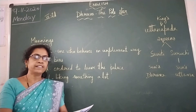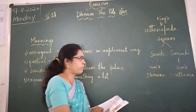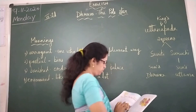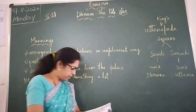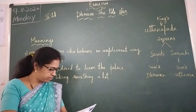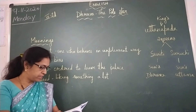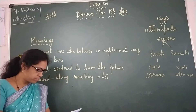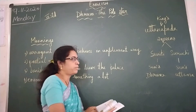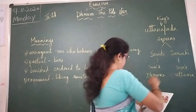Suniti had a son; his name was Dhruvam. And Suruchi also had a son; his name was Uttama.